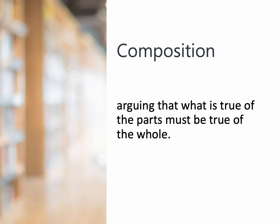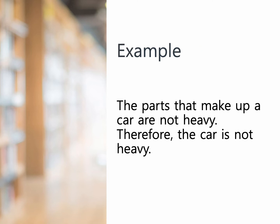The next two fallacies are composition and division — they are two sides of the same coin. Composition says: arguing that what is true of the parts must be true of the whole. For example, suppose I say the parts that make up a car are not heavy, and therefore the car is not heavy.